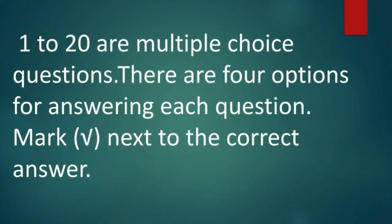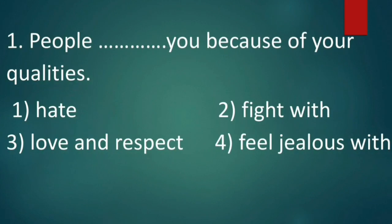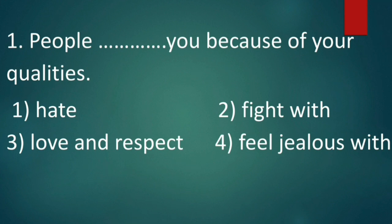There are four options for answering each question and you need to mark a tick next to the correct answer. Question number one: People dash you because of your qualities. Option one: hate. Option two: fight with. Option three: love and respect. Option four: feel jealous with. Kids, people do not hate you, fight with you, or feel jealous with you because of your qualities. Hence the answer is option three: love and respect.